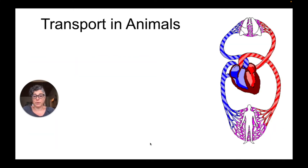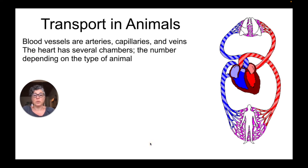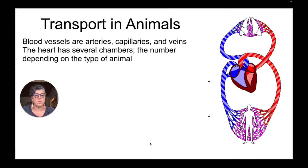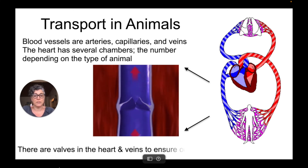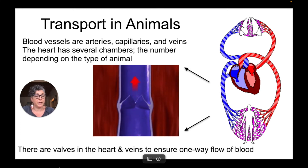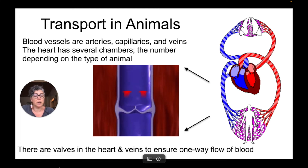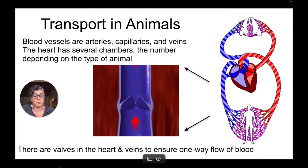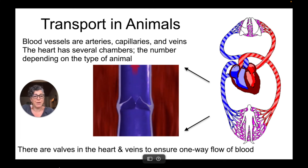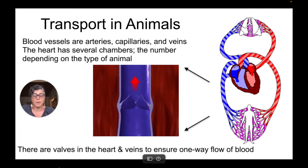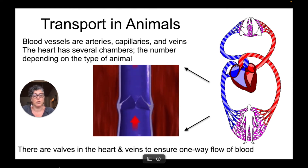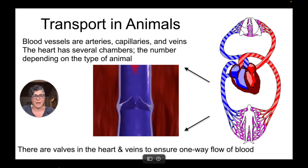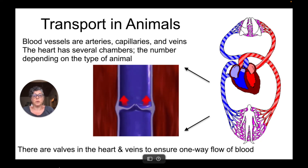So let's talk about transport in animals. The blood vessels we are going to be looking at are arteries, capillaries, and veins. The heart itself has several chambers, and the number of chambers will depend on the type of animal. For mammals we have a four-chambered heart, but other types of animals have different chambered hearts, and that will affect respiration.